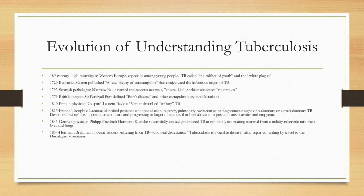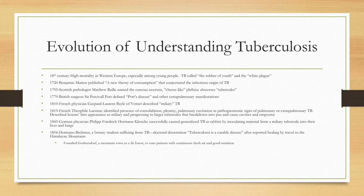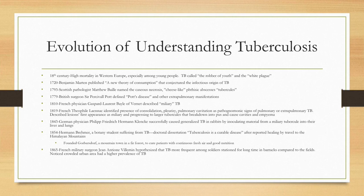Herman Bremer in 1854 was a botany student suffering from TB who wrote a dissertation that tuberculosis is a curable disease, after reporting healing by travel to the Himalayan mountains. He was quite influential, founding a mountain town in a forest to cure patients with continuous fresh air and good nutrition. In 1865, it was hypothesized that TB was more frequent among soldiers stationed for a long time in barracks.